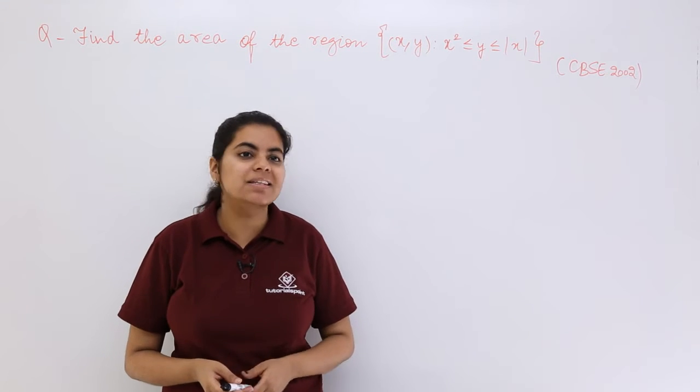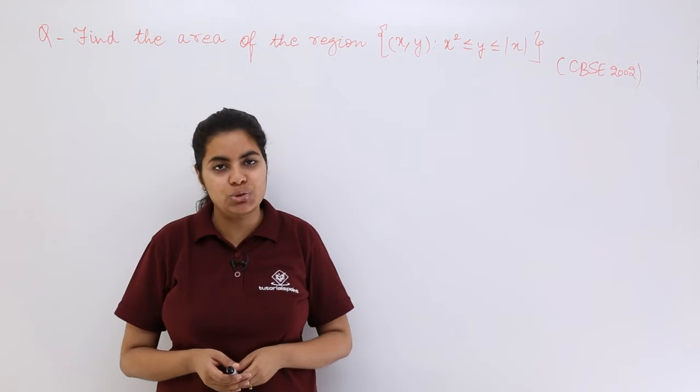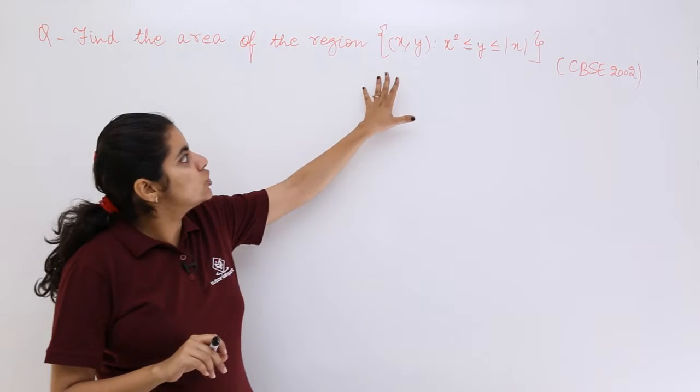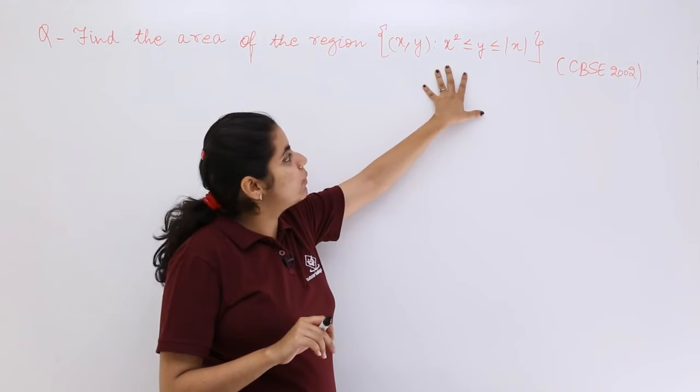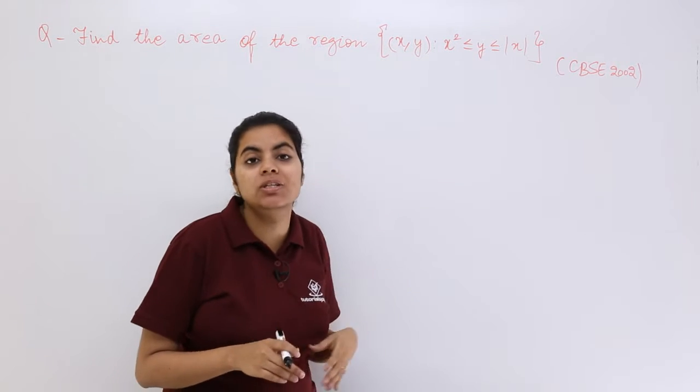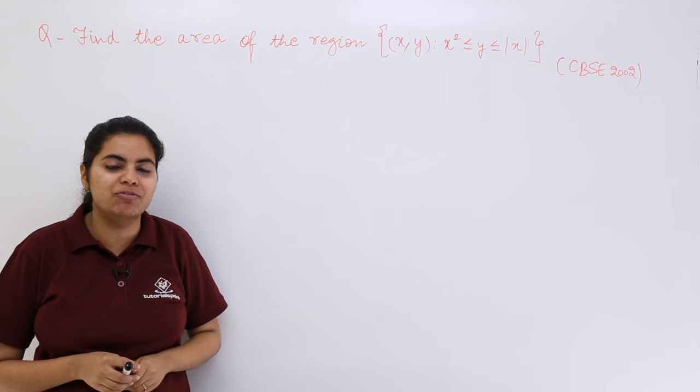Let's see this question asked in the CBSE examination 2002. This question is: find the area of the region {(x,y): x² ≤ y ≤ |x|}. So this question is different because it has modulus involved.